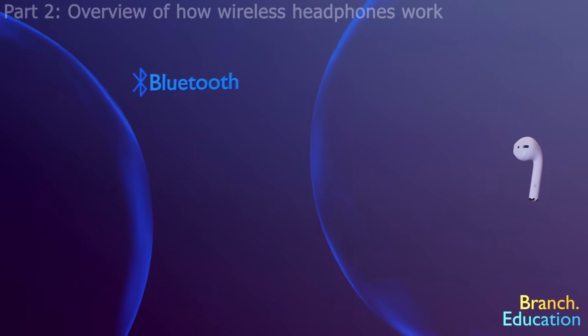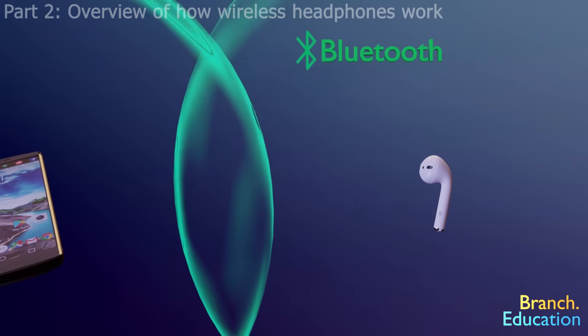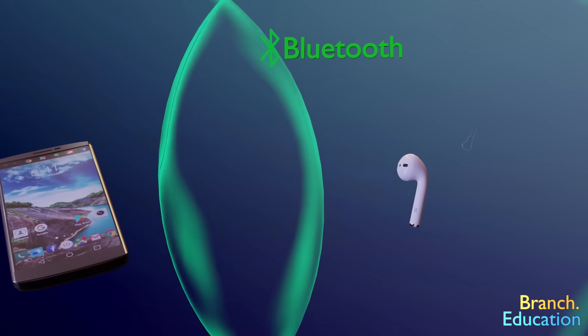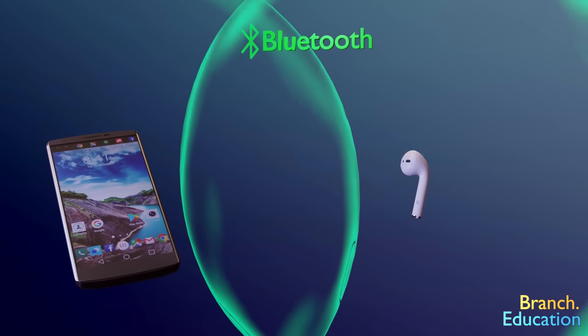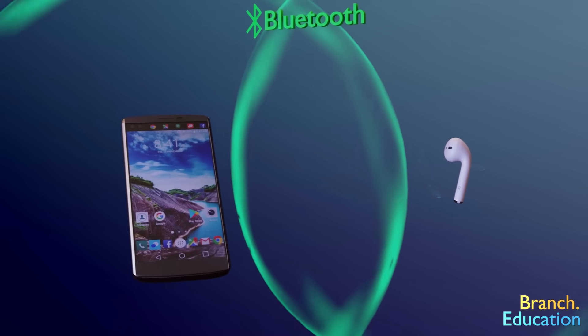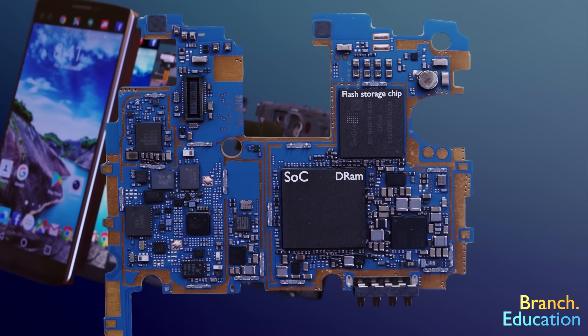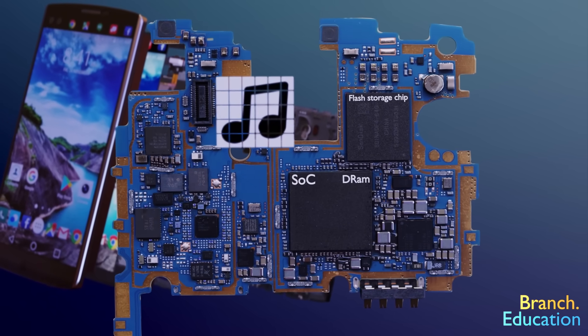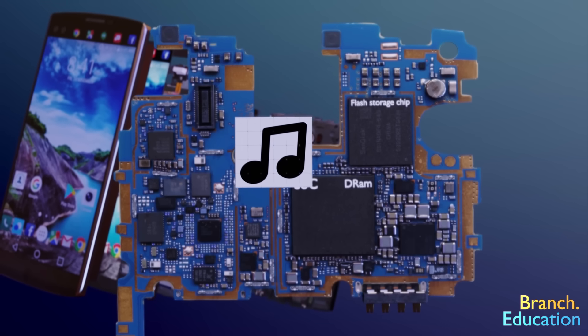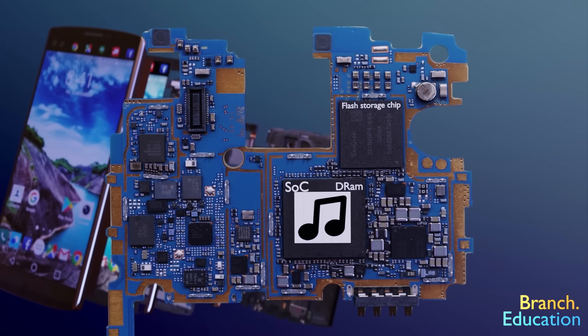When you turn on your already paired wireless headphones near your smartphone, a Bluetooth communication channel is established in order to send information back and forth. As soon as you start playing music or a podcast, your smartphone grabs the audio data from its flash storage chip, decompresses the audio and stores it in your phone's working memory.